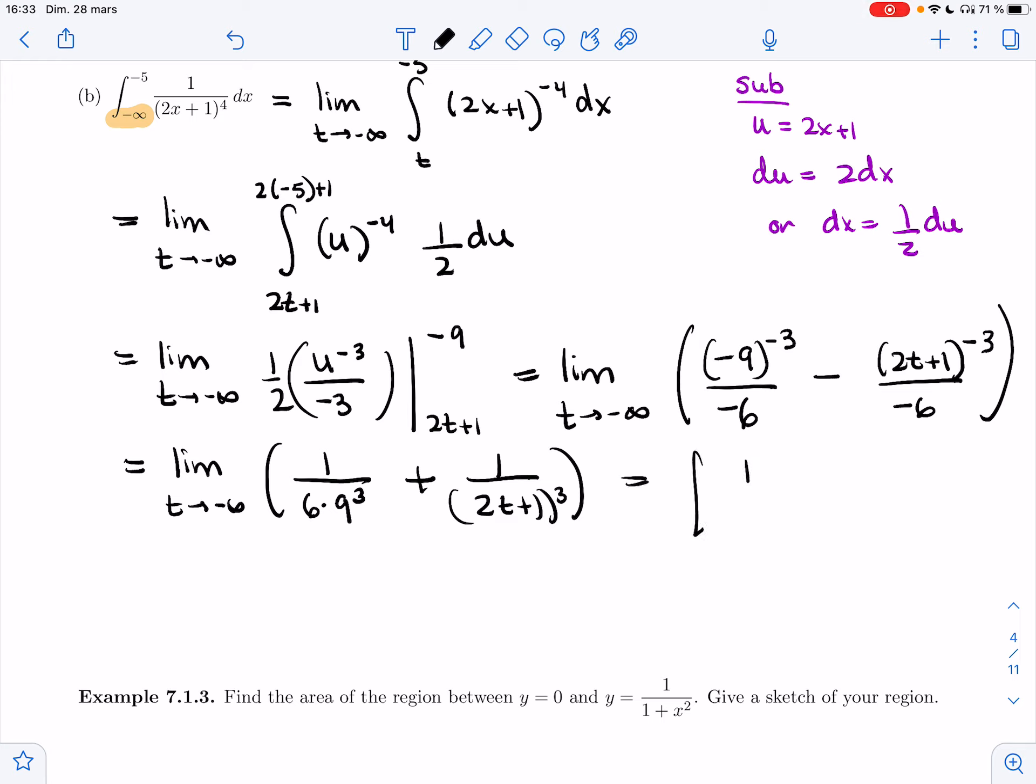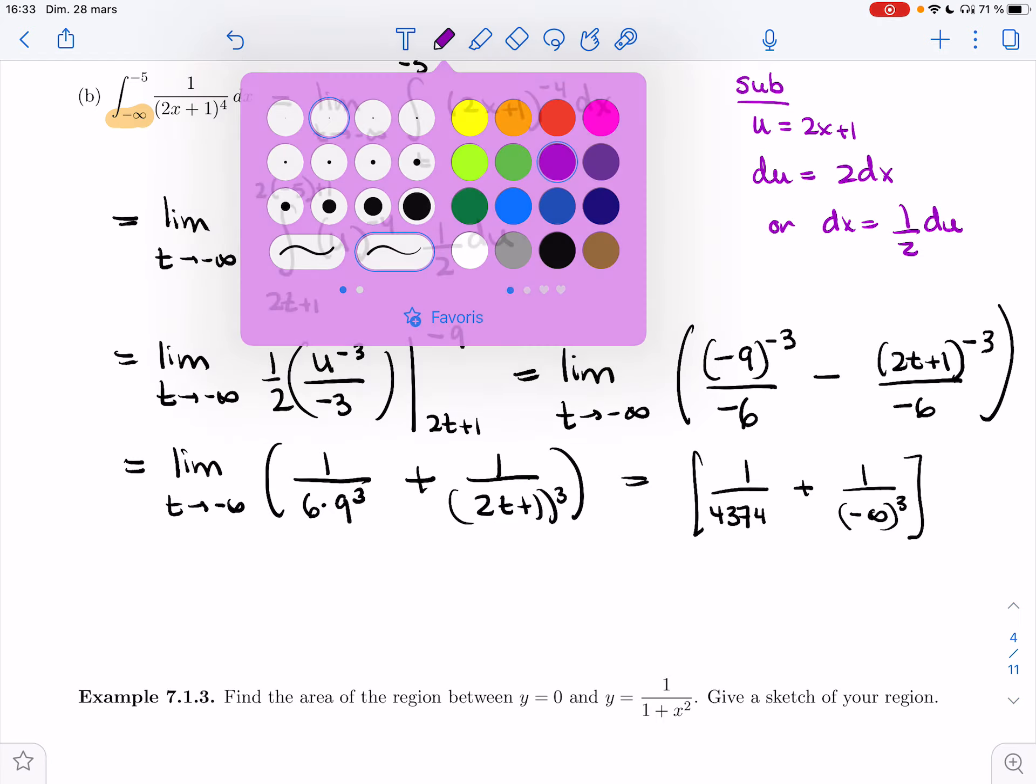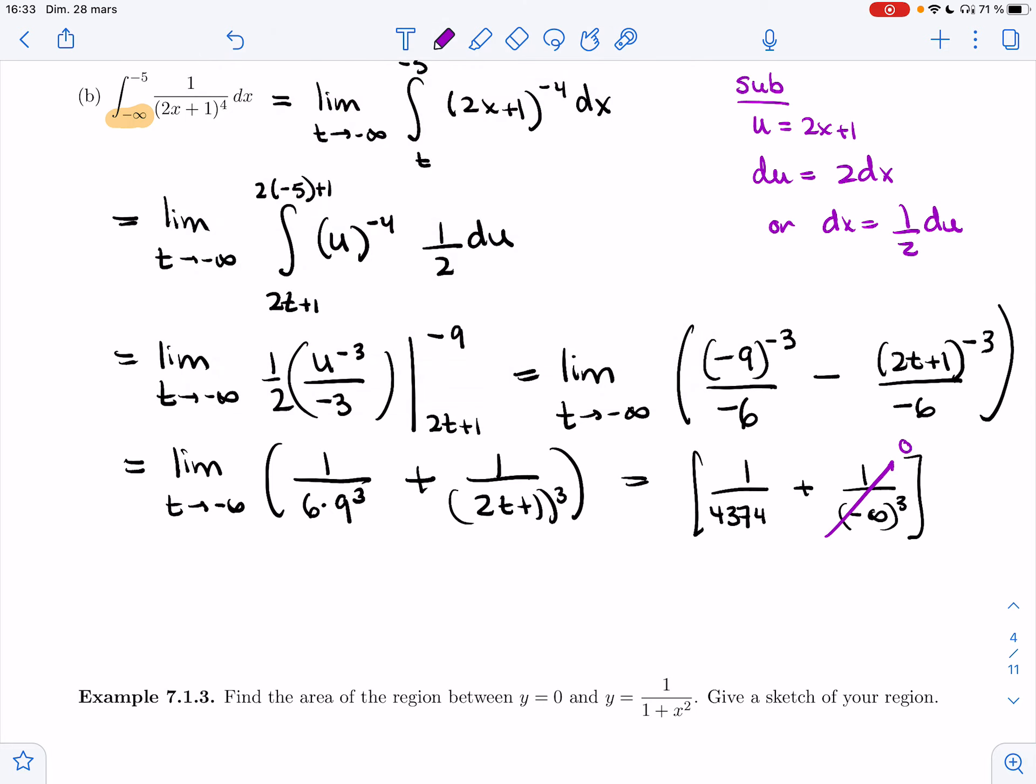I calculated it before, it's 4,374 plus 1 over minus infinity, 2t plus, minus infinity cubed. And so this part goes to 0. I end up with 1 over 4,374.